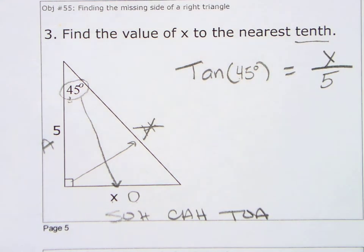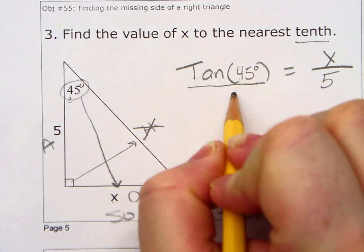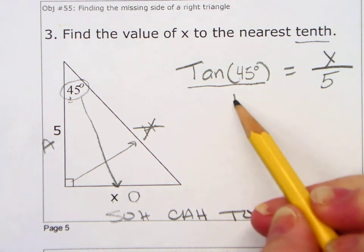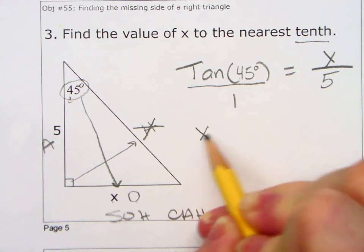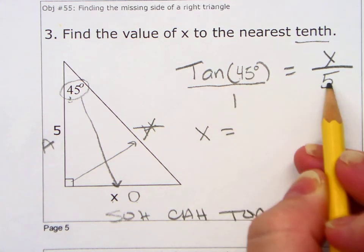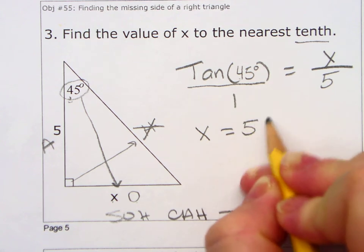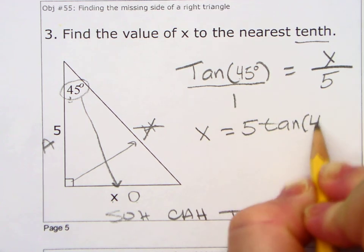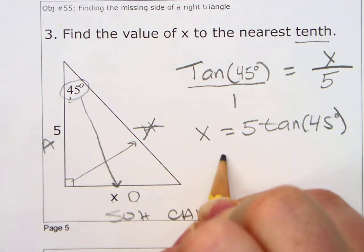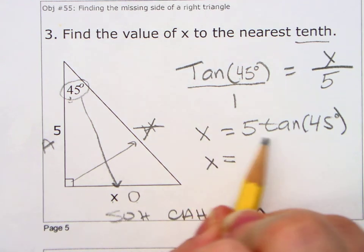Notice, this is why we went over cross-multiplying. How do we solve for X? I'm going to put this over 1 and cross-multiply. 1 times X is X. Tan of 45 times 5 is 5 tan of 45.